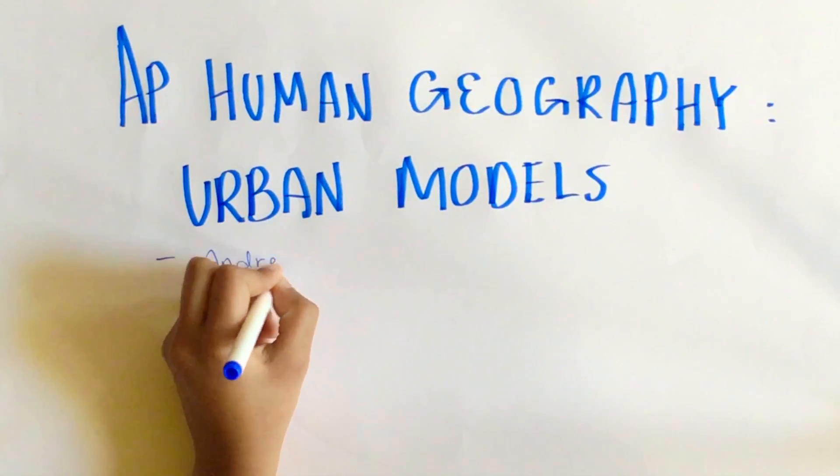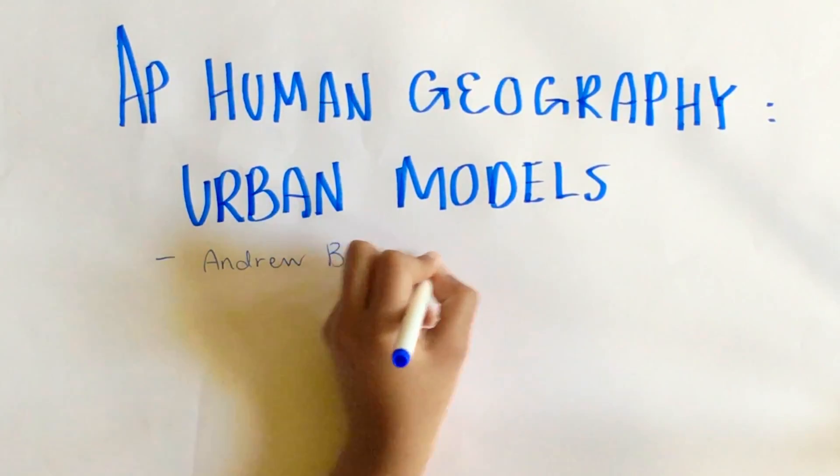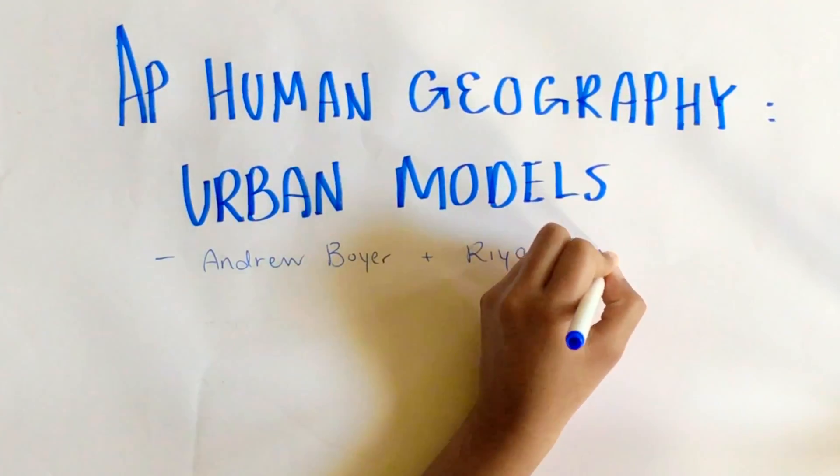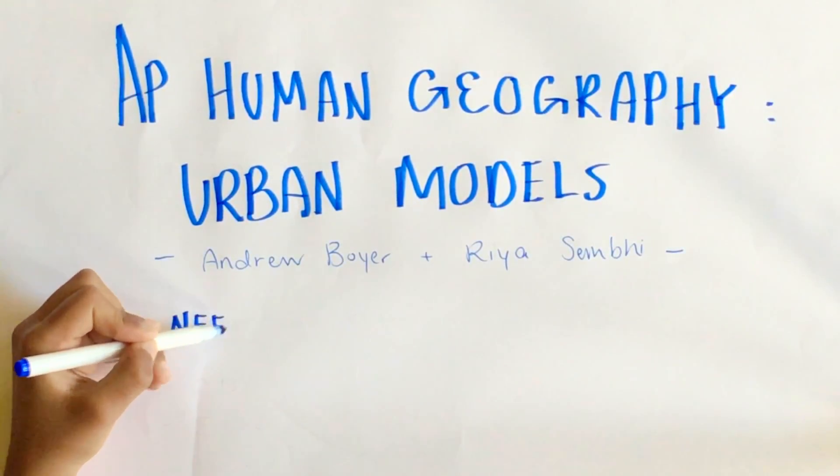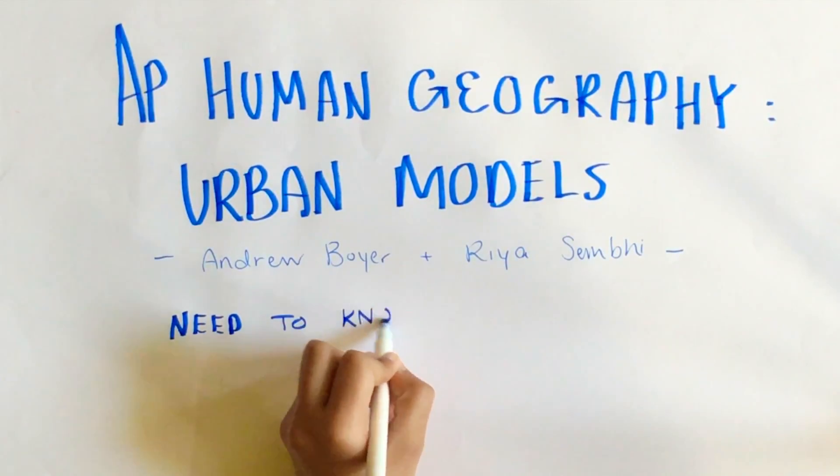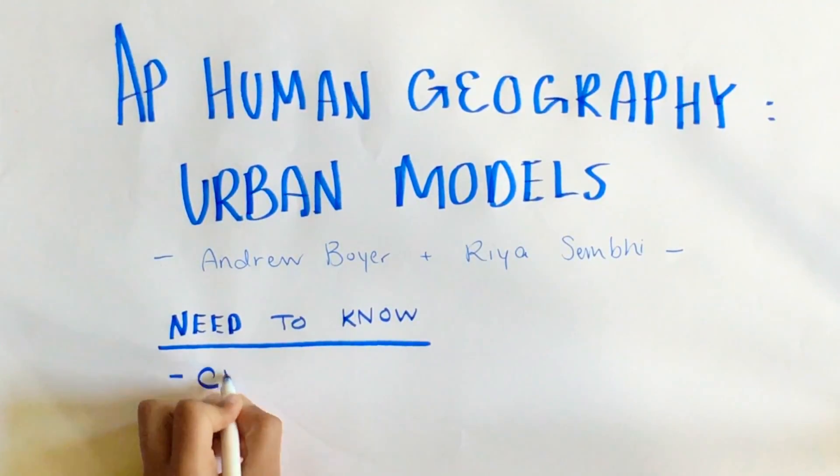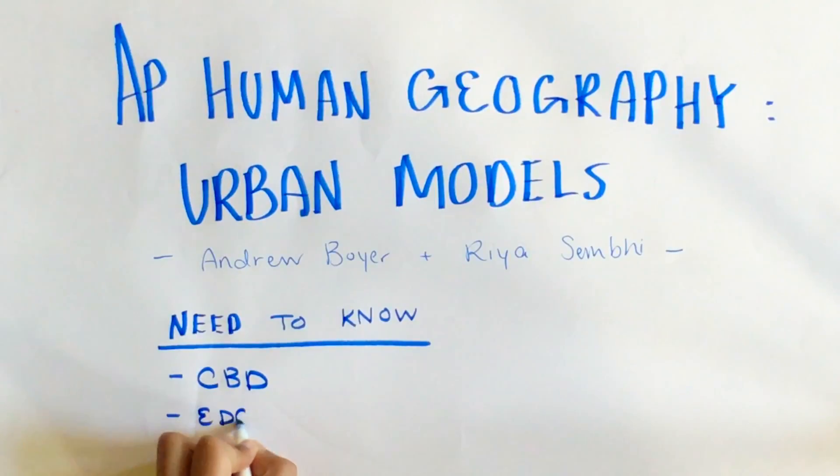Here are some important terms to keep in mind. The CBD, or Central Business District, is the focal point for business and commercial services to cluster in, and many cities revolve around this district. An edge city is a smaller city on the edge of a large city where services have clustered. A business service is a service that only provides to a business and typically clusters near the CBD.